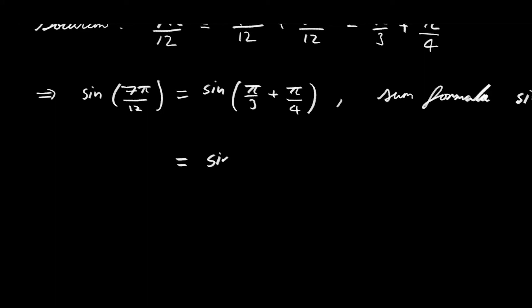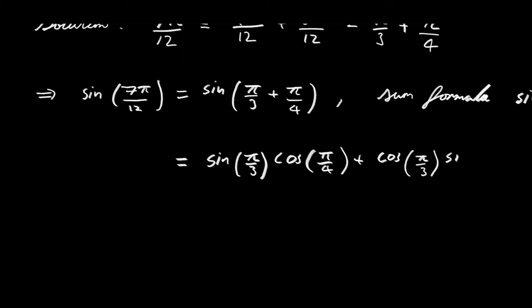When we do this, we obtain the sine of the first angle π over 3 times the cosine of the second angle π over 4, plus the cosine of the first angle π over 3 times the sine of the second angle π over 4. Now both the cosine of π over 4 and the sine of π over 4 equal 1 over the square root of 2. That can be seen from drawing the special triangles. And the sine of π over 3 is the square root of 3 over 2. All of these are special angles, so they can be worked out by drawing special triangles.